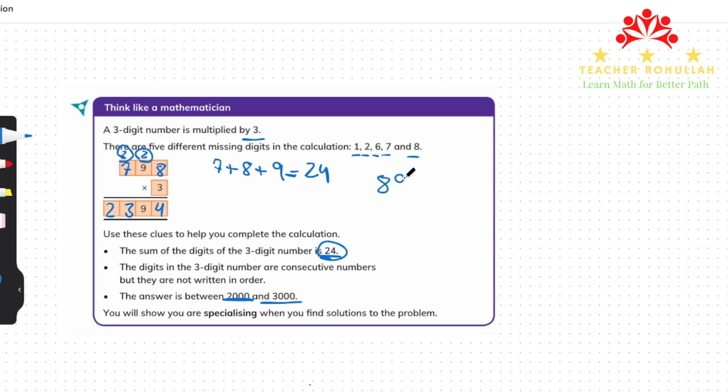We write 8, 9, 7 times 3. Let's see if it gives us the answer or not. The first condition is correct because 7 plus 8 plus 9 is 24 and it does not matter where we place 8 and 7.